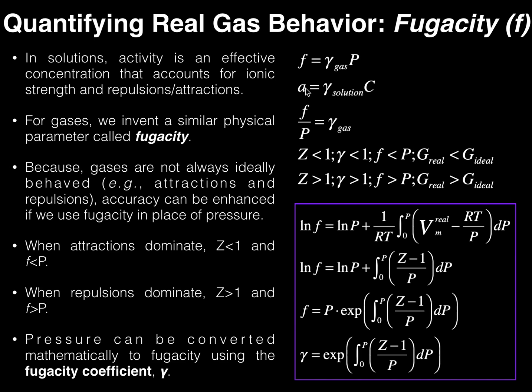When you're dealing with real solutions with non-ideal behavior, activity is usually preferred. In fact, when you measure the pH of a solution in biochemistry, what the pH meter is actually measuring is the activity, not the actual concentration, because it's looking at the real behavior of the solution. The gamma activity coefficient you generally look up in a table — an analytical or pchem textbook will have these values tabulated. This activity equation — activity equals the activity coefficient times the concentration — is for solutions, and it turns out we have a homologous equation for gases.